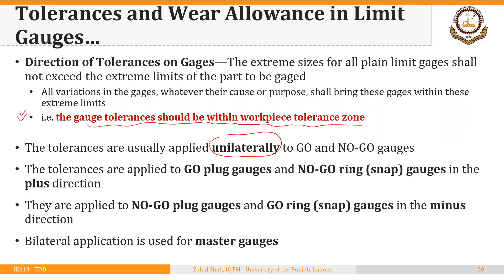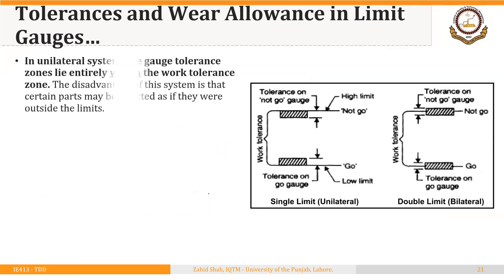The second question is whether tolerances should increase or decrease the gauge size. Tolerances are applied to go plug gauges and no-go ring or snap gauges in the plus direction, and to no-go plug gauges and go ring and snap gauges in the minus direction. This ensures that gauge tolerances remain within the workpiece tolerance zone. Generally, bilateral tolerances are applied to master gauges, but for working gauges we apply unilateral tolerances.